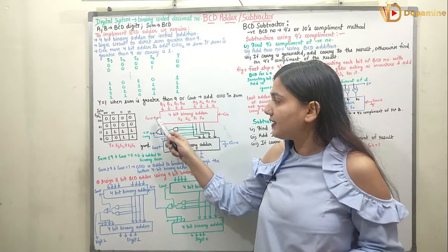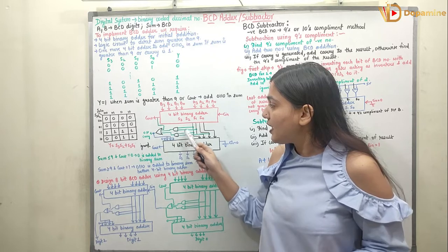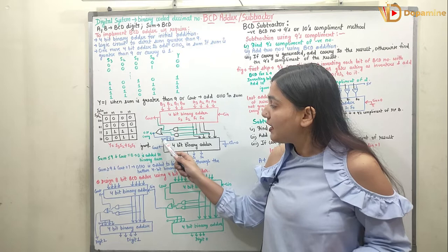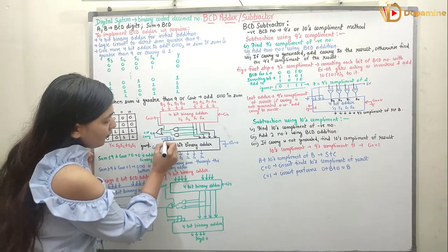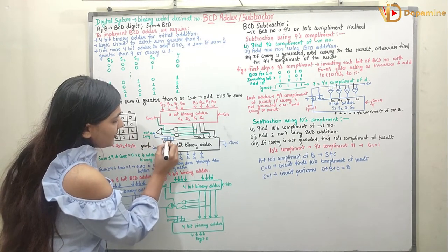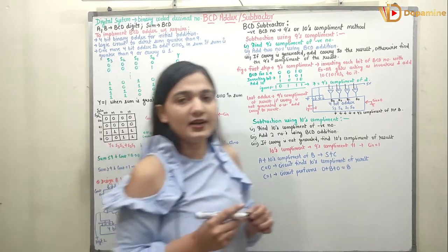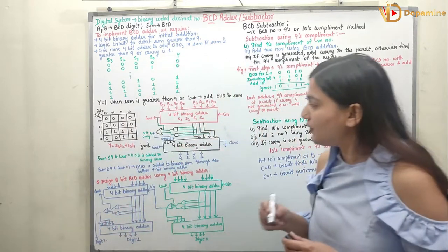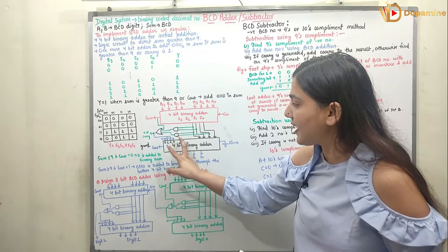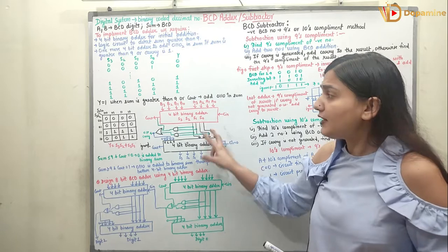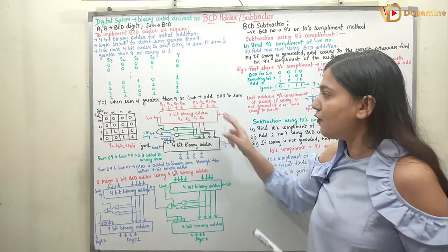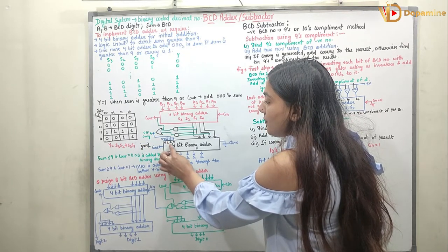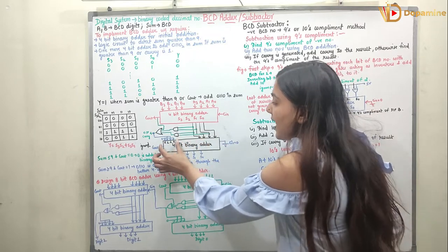In both cases — when the sum is greater than 9 and when the carry is 1 — you can see I have connected it to the carry. So this logic represents: sum is greater than 9 or carry is present. At that time, I am adding 0110 to the sum. This is connected to the output carry, so if it is 1 we add 0110. The first number going into the second 4-bit adder is 0110, and the second number is the sum we are getting.